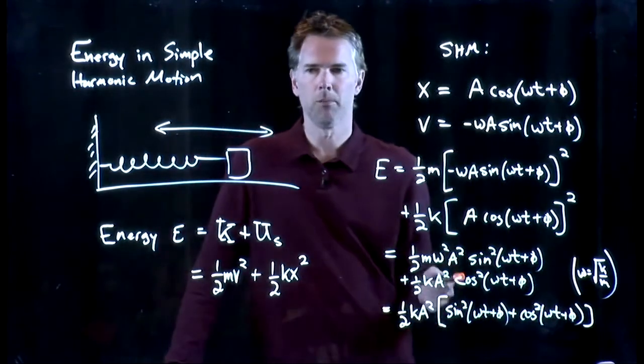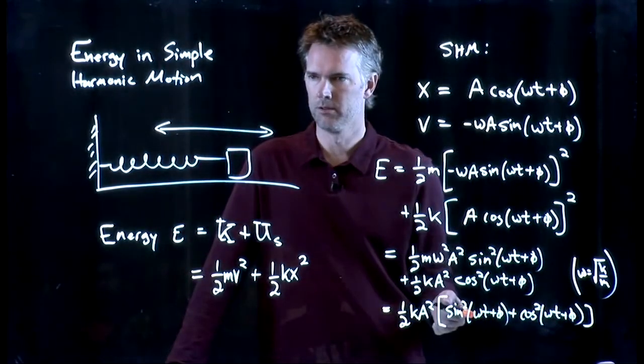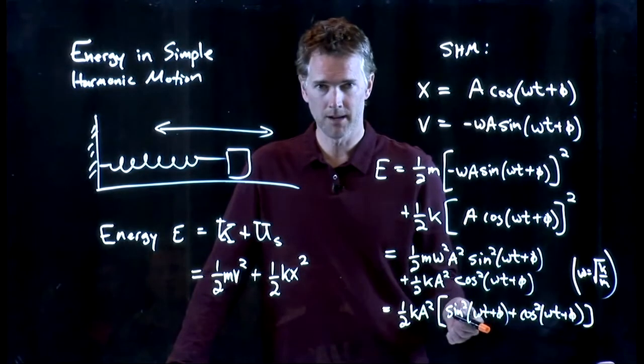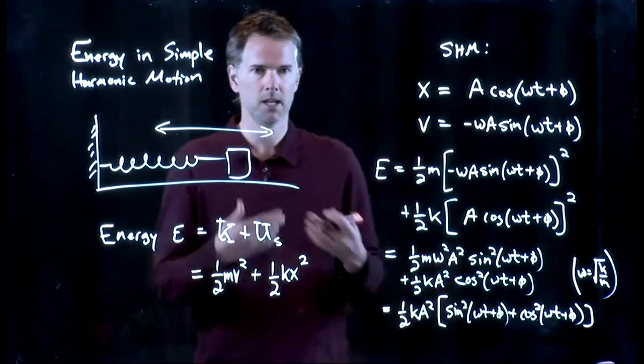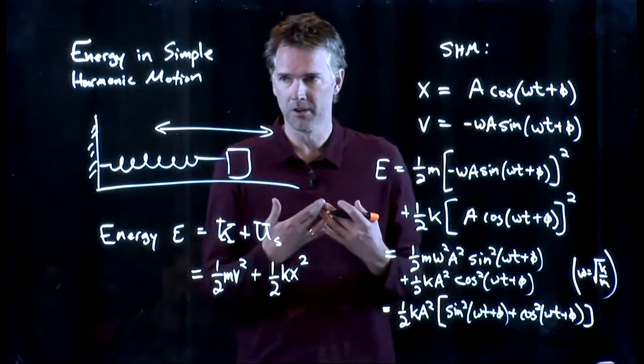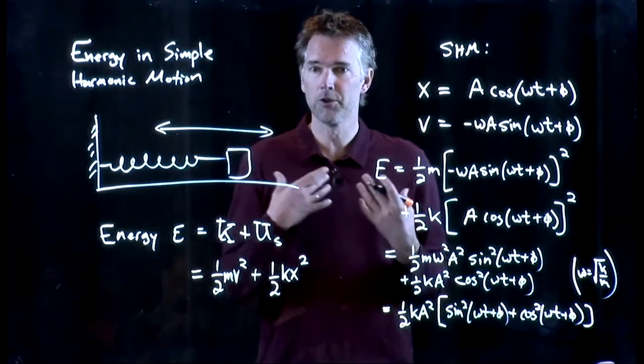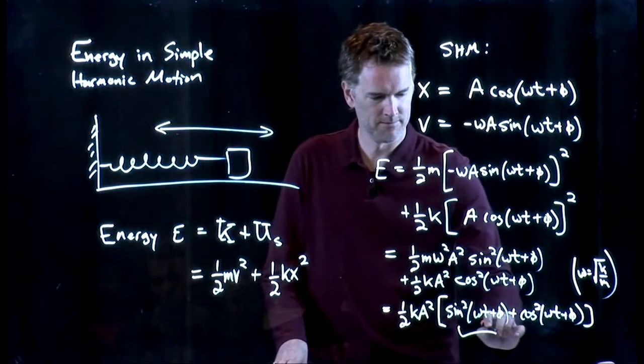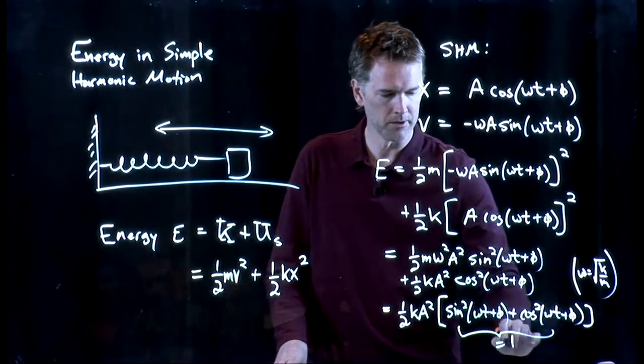And now we go back to our joke, right? Anybody remember the joke? What's the geek pickup line? Geek approaches the girl at the bar and he says, I wish I was sine squared and you were cosine squared, so together we could be one. You are allowed to boo in here if you want. That's fine. That is equal to one.